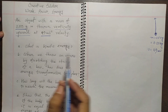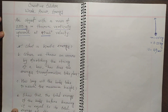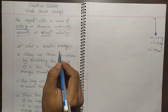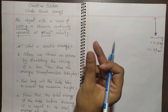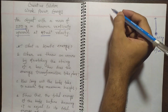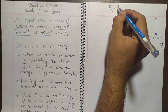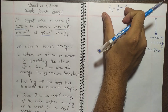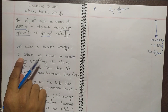This is a creative solutions problem with four questions. First question: what is kinetic energy? The energy that an object receives due to being in motion is called kinetic energy, and the kinetic energy formula is EK equals half mv squared.